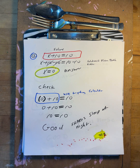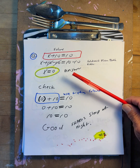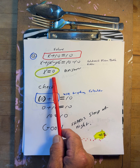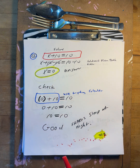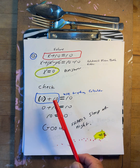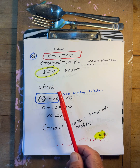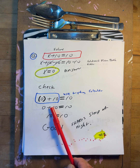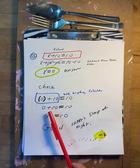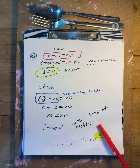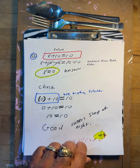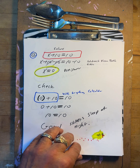x plus ten equals ten. Minus ten, minus ten. So x must be zero. Does that work? Put it back in: zero plus ten — zero plus ten is ten. Yes.